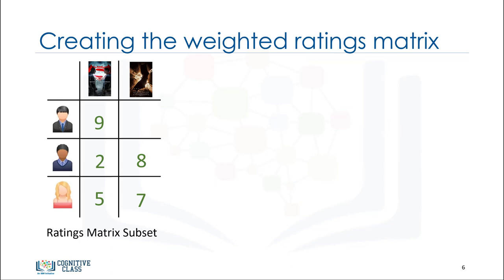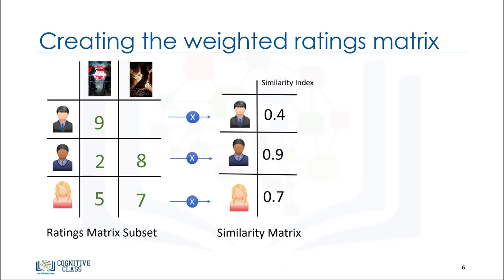The next step is to create a weighted rating matrix. We just calculated the similarity of users to our active user. Now we can use it to calculate the possible opinion of the active user about our two target movies. This is achieved by multiplying the similarity weights by the user ratings.